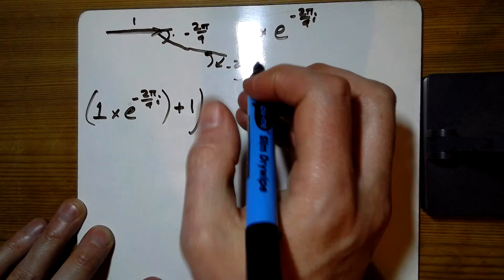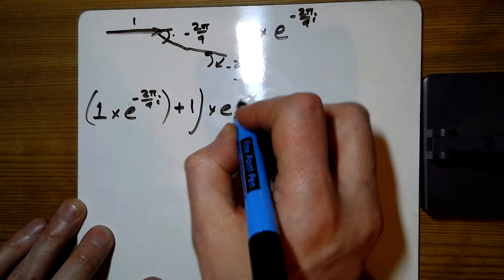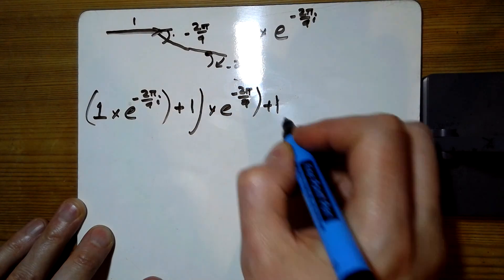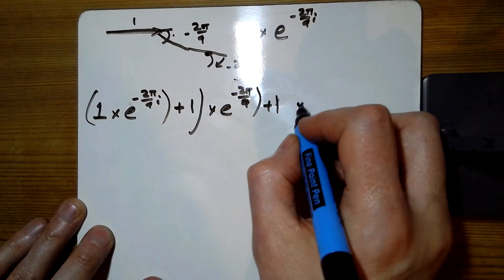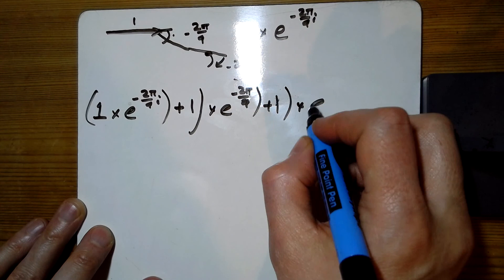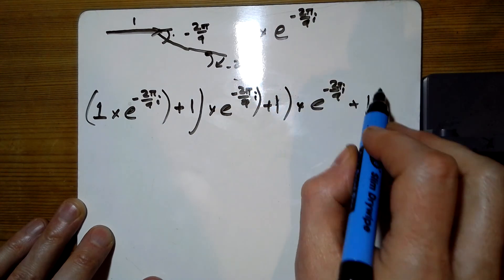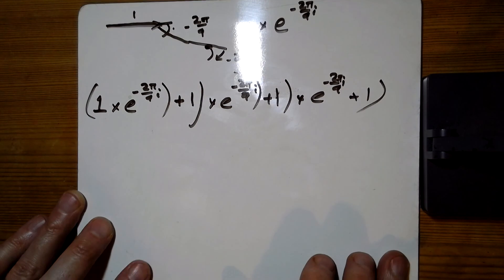But then we need to rotate it again. So just move that out of the way. So times by another e to the minus 2pi over 9, and then add 1. And then times by another e to the minus 2pi over 9, should have an i here, and add 1 on the end.